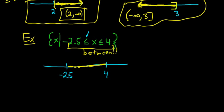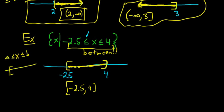This comes up a lot in statistics and probability. Whenever it's something like this, it's the "between" notation. It's brackets on both ends because we have the equal to parts, and brackets always open toward the shading. So the answer is bracket negative 2.5, comma, 4, bracket. Whenever you have a ≤ x ≤ b, it means x is between those two numbers.